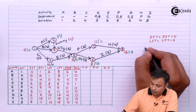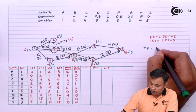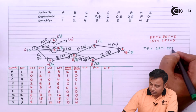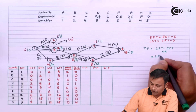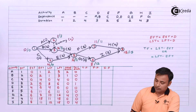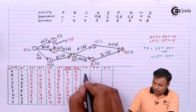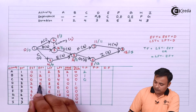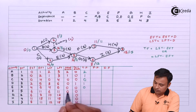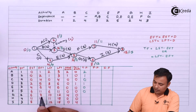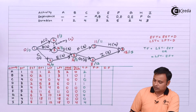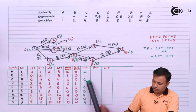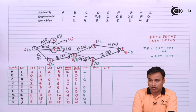Total float will be Latest Starting Time minus Earliest Starting Time, or Latest Finishing Time minus Earliest Finishing Time. The differences give: 3-1, 3-2, 4-4, 6-5, 6-6, 11-11, 12-8, 15-15, and 15-11. Total float is 0 for C, E, F and H. So these can be called critical activities.